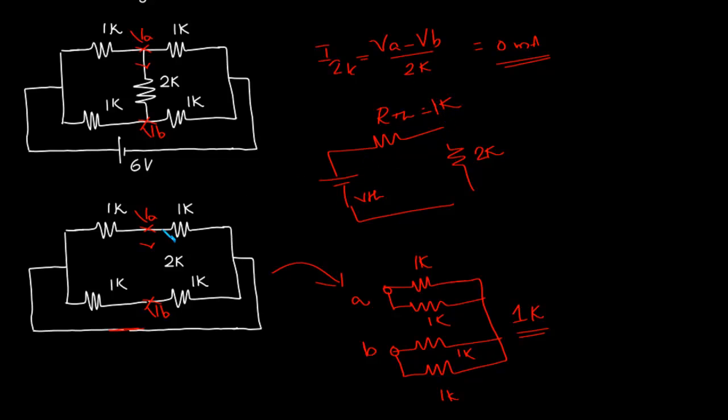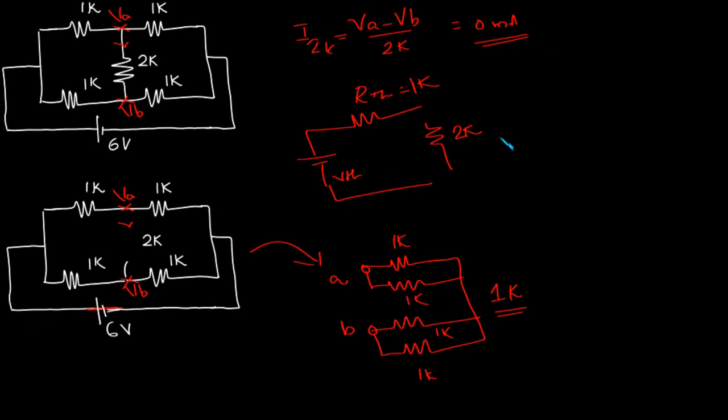Now we have to find out what is the voltage across A-B. For that, we will replace the voltage source and find V-B. Sorry, first we will find V-A. V-A is 6-volt into 1k by 1k plus 1k. That is the voltage divider rule. That is, 3 volts.